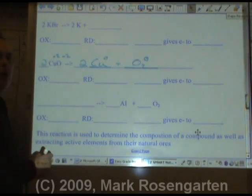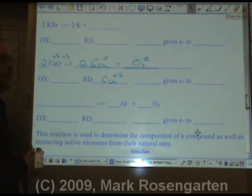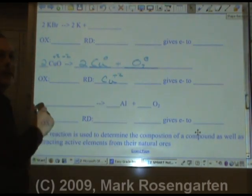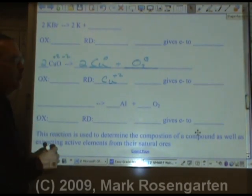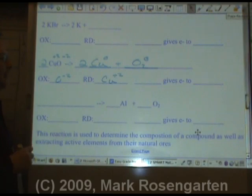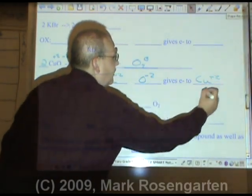The copper goes from plus two down to zero. Its charge is reduced to a lower value. Therefore, copper plus two is reduced. The oxygen goes from minus two up to zero. It lost two of its electrons. So oxygen minus two is oxidized. Electrons go from the oxide ion to the copper two ion.